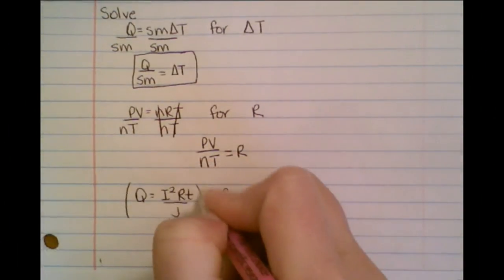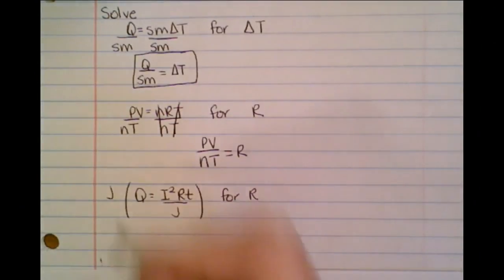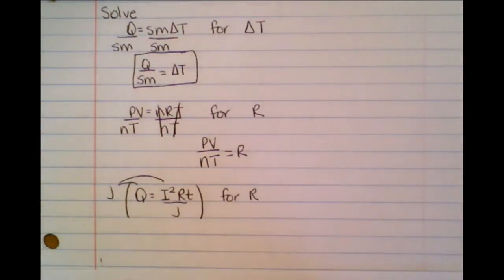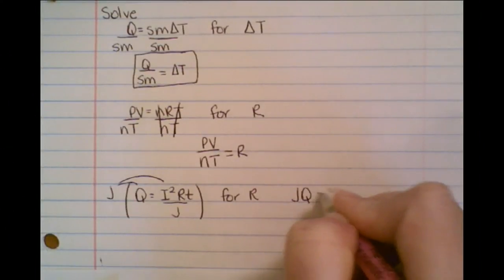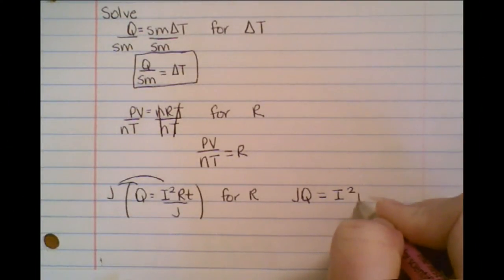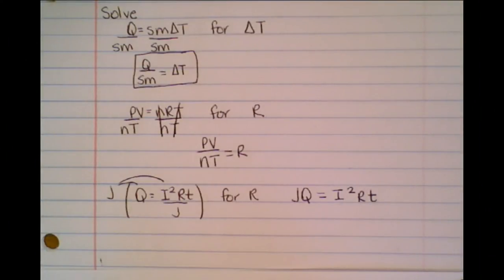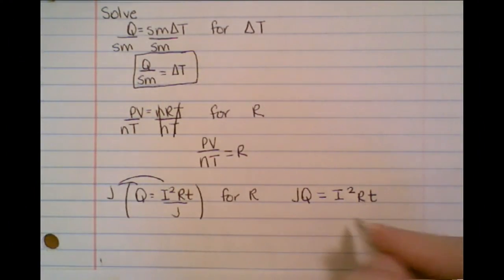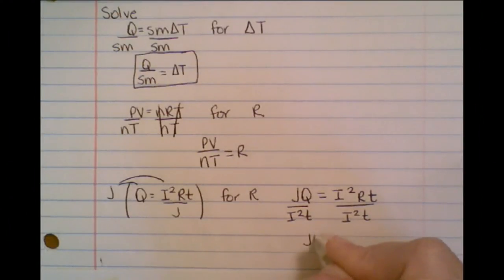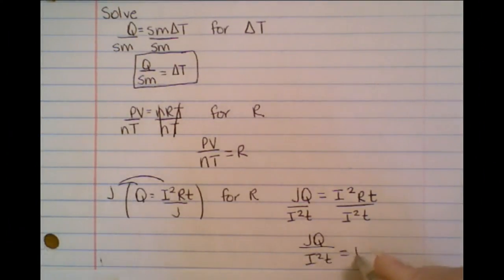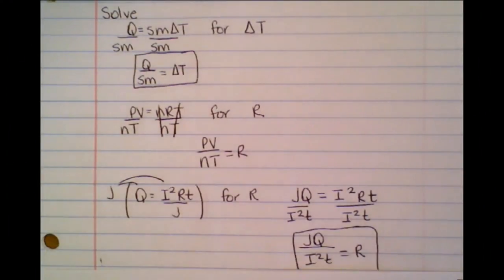We're going to multiply the entire equation by J. And so you're going to distribute that just like we've done in previous examples. So that's going to give me J times Q equals I squared R T. Now this looks exactly like what we just did in the previous example. I'm going to get rid of everything that's not an R, so I'm going to divide by I squared T on both sides. So I'm going to get JQ over I squared T equals R. And that's your final answer.